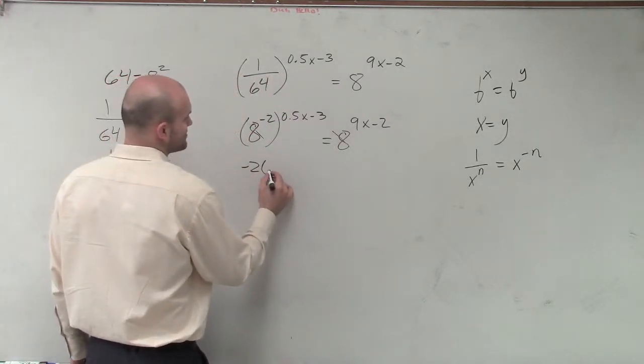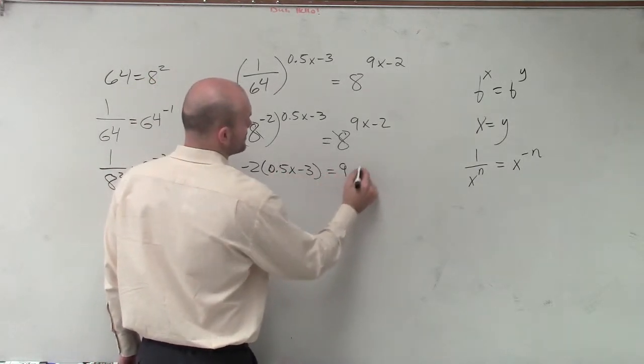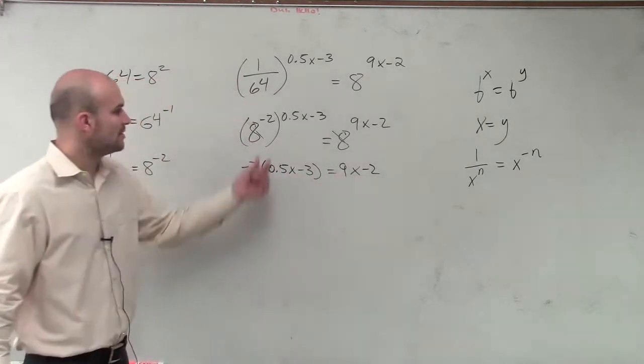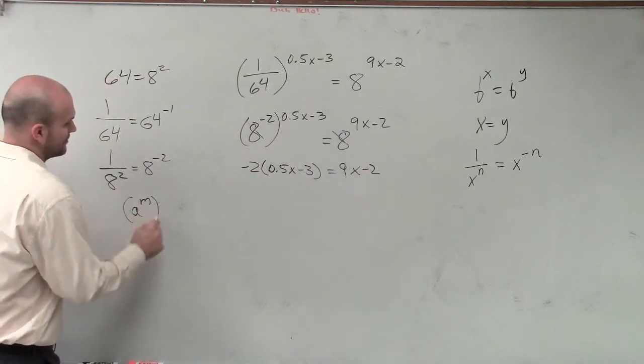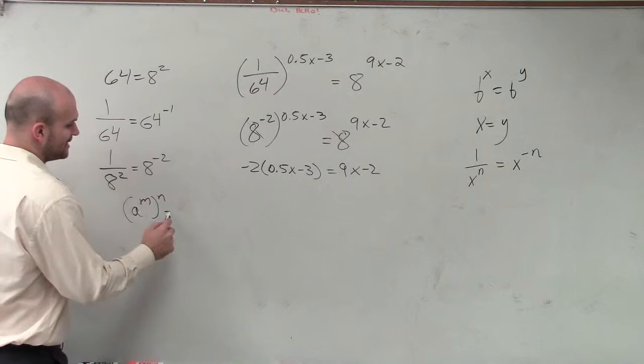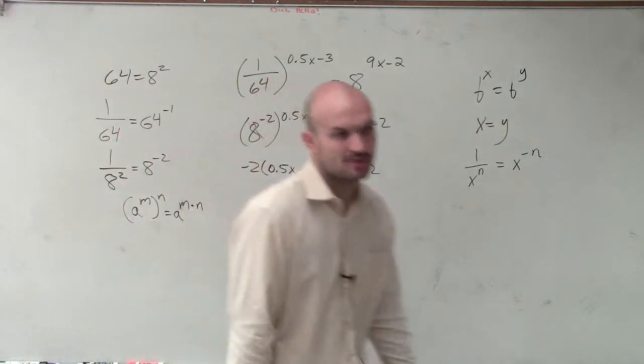So I have negative 2 times 0.5x minus 3 equals 9x minus 2. Remember, we have to apply the power of power rule: a to the m raised to the nth power equals a to the m times n. So that's why I'm multiplying my exponents up there.